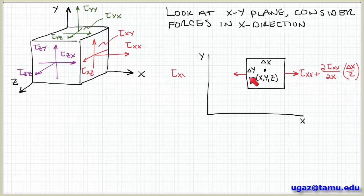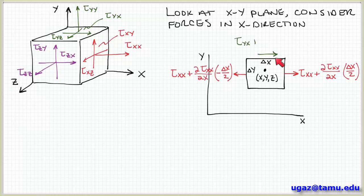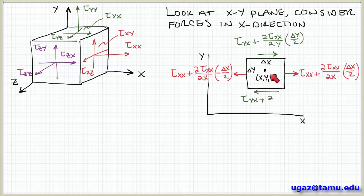Similarly, I can make the same analysis on the left-hand face: tau xx evaluated at point x, y, z, mapped out to the left-hand face, so plus the partial derivative of tau xx with respect to x times the distance minus delta x over 2 from the center to the left-hand face. Now looking at the top surface — this surface has a normal vector in the y direction and I'm considering forces acting in the x direction — the component of interest is tau yx plus the rate of change of tau yx with respect to y times delta y over 2. On the bottom face I have tau yx plus the rate of change of tau yx with respect to y times minus delta y over 2.